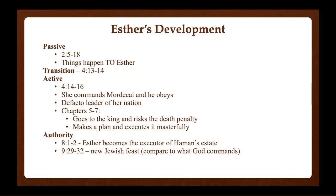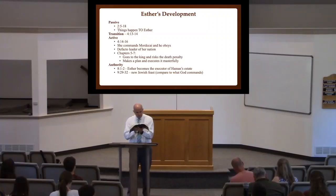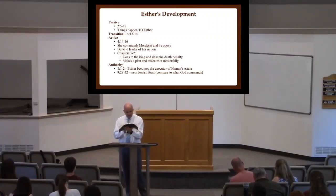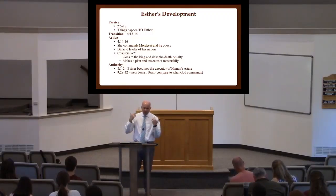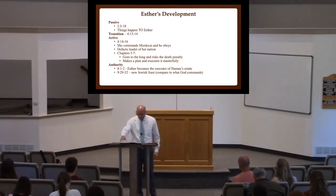Verse 5: 'There was a Jew in Susa, the citadel, whose name was Mordecai, the son of Kish, a Benjaminite, who had been carried away from Jerusalem among the captives, carried away with Jeconiah king of Judah, whom Nebuchadnezzar king of Babylon had carried away. He was bringing up Hadassah, that is Esther.' Another questionable thing — her name is Hadassah, but she's adopted her Persian identity as Esther. When the king's order was proclaimed and many young women were gathered in Susa, Esther also was taken into the king's palace. You read the whole story and everything is happening to her — she's a passive character who just does what happens to her. But then you have this transition in chapter 4.